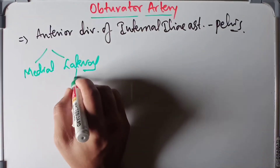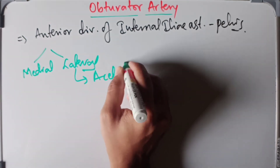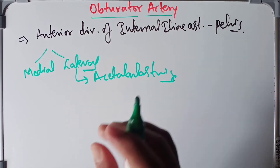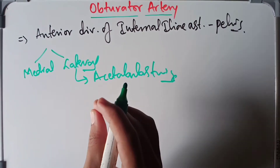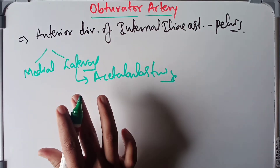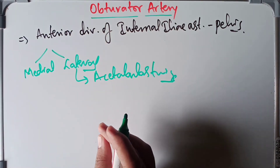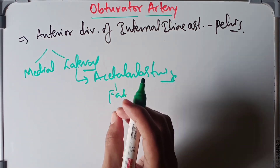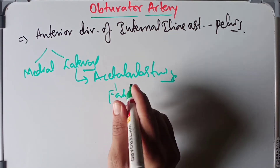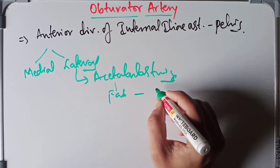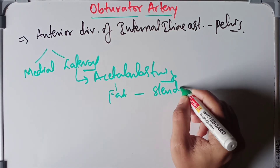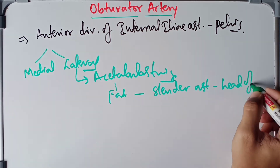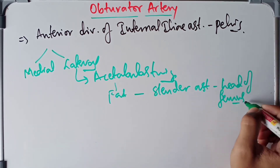The lateral branch gives off an acetabular twig, which enters the acetabulum through a gap between the acetabular notch and the transverse acetabular ligament. From there, it supplies the acetabular fat and also gives off a slender artery to the head of the femur, traveling along the ligament of the head of the femur.